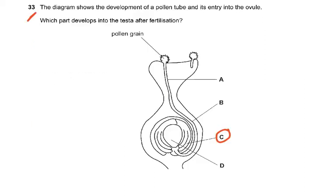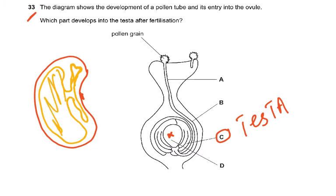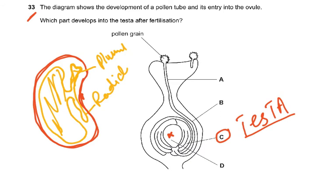Question 33: the diagram shows the development of a pollen tube and its entry into the ovule. Which part develops into the testa after fertilization? Fertilization takes place inside the ovule, and the outer area — the seed coat — develops into the testa. The seed has a testa (outer coat), hilum where it was attached, plumule, radicle, and cotyledons. The outside of the ovule is the part that develops into the testa.